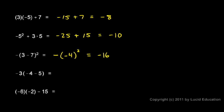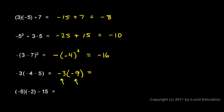Here, negative 3 times negative 4 minus 5. We do what's in parentheses first. So let's keep the negative 3, then I'm going to write my parentheses and carry out the operation inside. Negative 4 minus 5 is negative 9, so I end up with negative 3 times negative 9. That's two negative numbers multiplied together, which will give me a positive answer, and 9 times 3 is 27. So my result is positive 27.